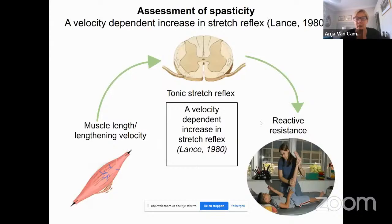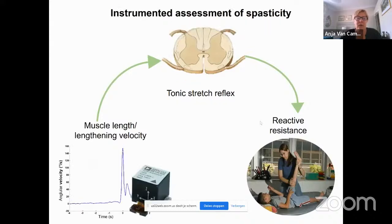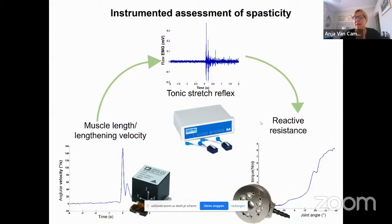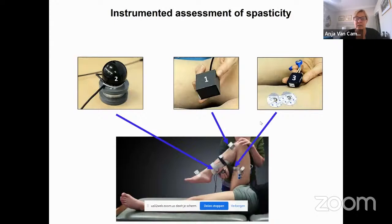Looking again at the definition of spasticity — a velocity-dependent increase in stretch reflex — maybe we can define this using means other than subjective resistance. We can measure the velocity at which we move the joint using an instrument. When we do the motion, we can measure the tonic stretch reflex on the muscle via EMG, and simultaneously measure the reactive resistance or torque with which we must move the joint. Combining these three measurements is what we do in instrumented spasticity assessment.